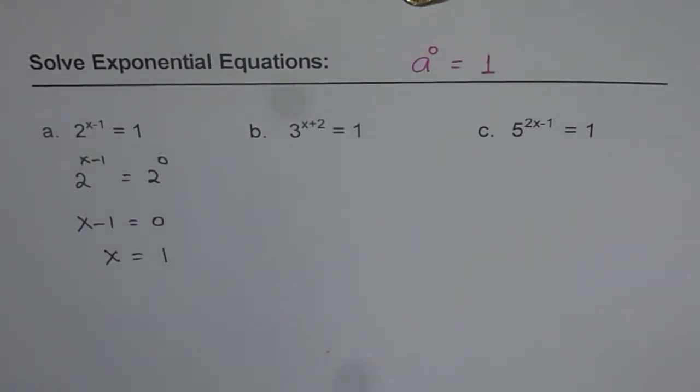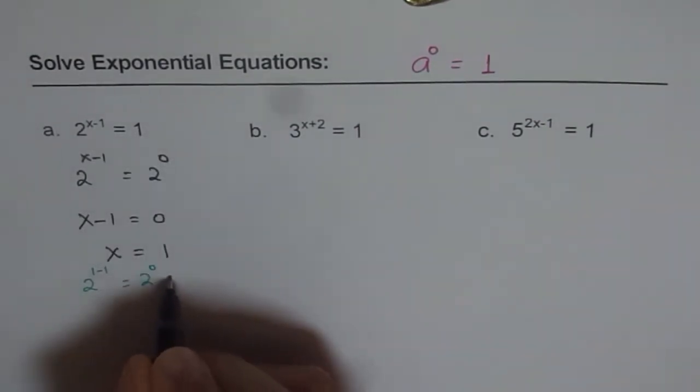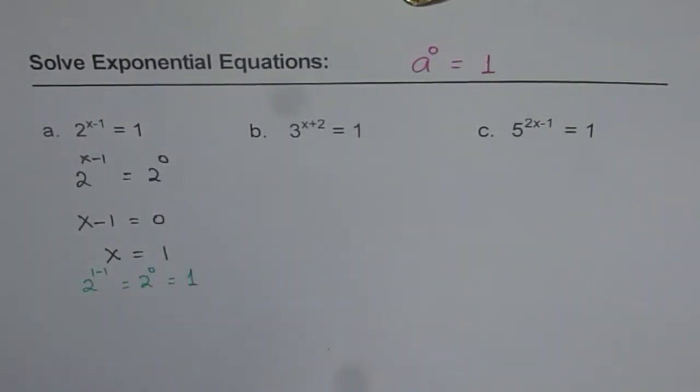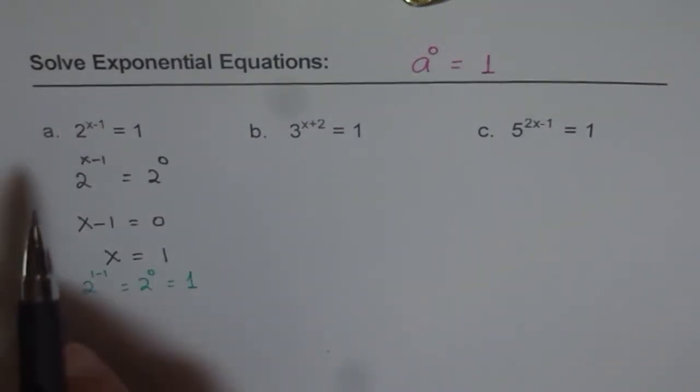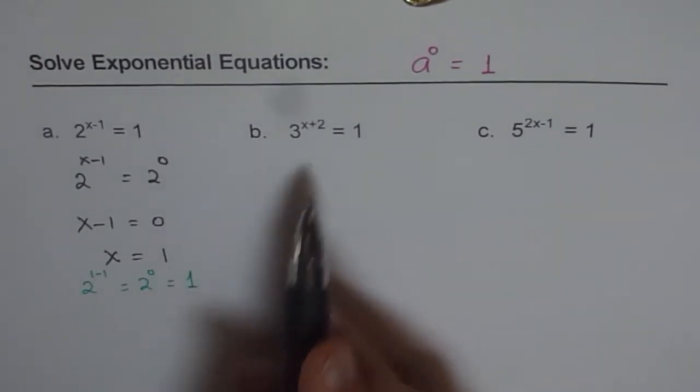You can always check your solution. If I replace x with 1, what do I get? I get 2 to the power of 1 minus 1, which is 0. And anything to the power of 0 is 1. So you get the right side. That is how you can check. These are the steps to follow to solve such equations. Let's do them once again.